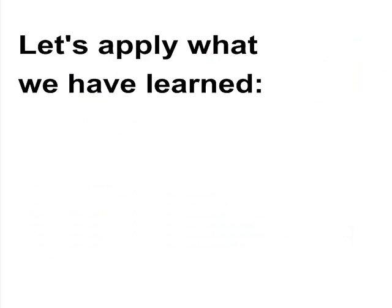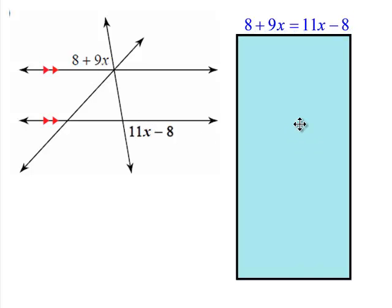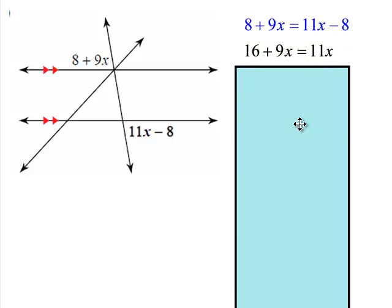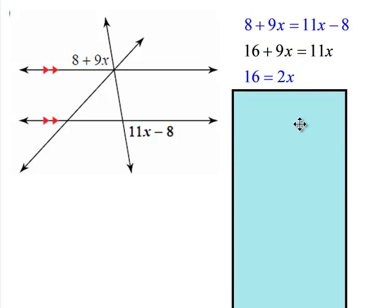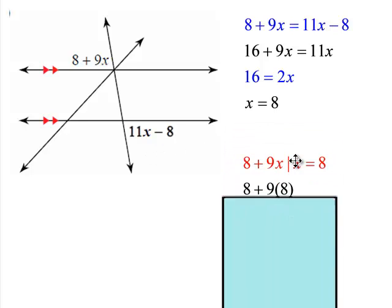Now that we've gotten past the proof, let's apply what we've learned. These are alternate exterior angles with two parallel lines and a transversal, which means you can set those two expressions equal to each other and do the math. I did the original setup — added 8 to each side, subtracted the 9x from each side, divided by 2 — and we get x equals 8. To find the measure of these angles, substitute 8 in for one of those expressions.